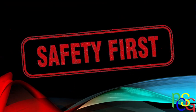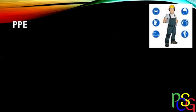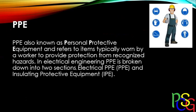The most important thing in electronics and electrical engineering: safety first. You tend to have fewer safety problems when dealing with electronics because you're not dealing with such high voltages, power, and current. But on an electrical level, the hazards are much greater. We're going to talk about PPE — personal protective equipment — items typically worn by a worker to provide protection from recognized hazards.